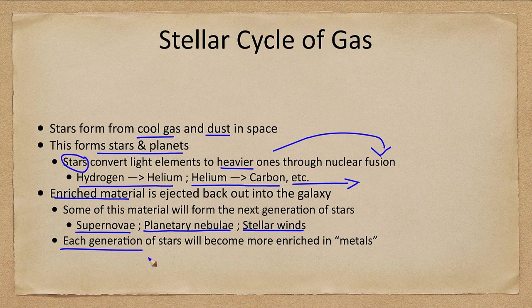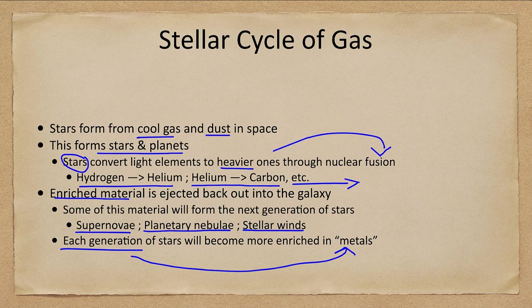Each generation of stars will become more enriched in metals. Remember, a metal means anything other than hydrogen or helium. The very first generations of stars after the big bang would have been hydrogen and helium only. Later generations would have started to include things like carbon, oxygen, silicon, and iron that would not have been present in that earliest generation.